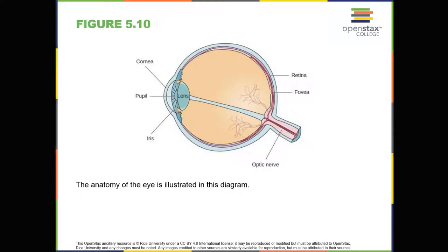The size of the pupil can change as a function of light levels as well as emotional arousal. When light levels are low, the pupil will become dilated or expanded to allow more light to enter the eye. When light levels are high, the pupil will constrict or become smaller to reduce the amount of light that enters the eye. The pupil's size is controlled by muscles that are connected to the iris, which is the colored portion of the eye.